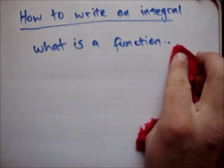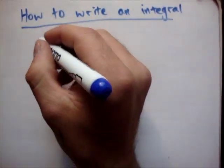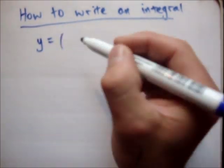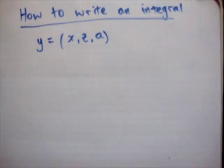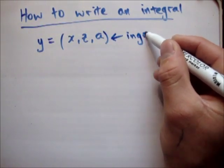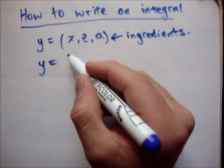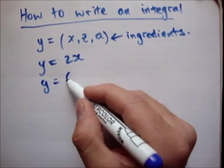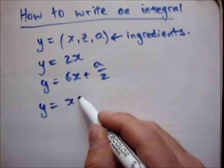So we said in the video about a function that we might have y with ingredients of x, z, and a. They're all the ingredients, but you don't always use all the ingredients. So sometimes y might be 2x, y might be 6x plus a over 2, y might be xza.